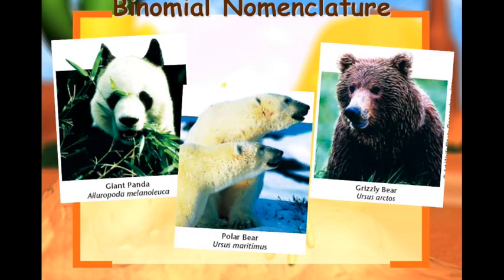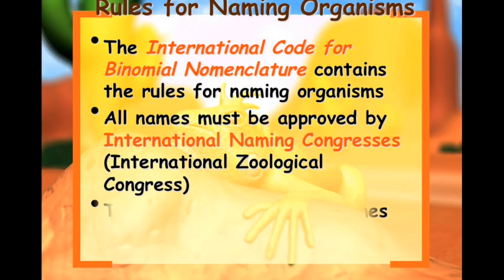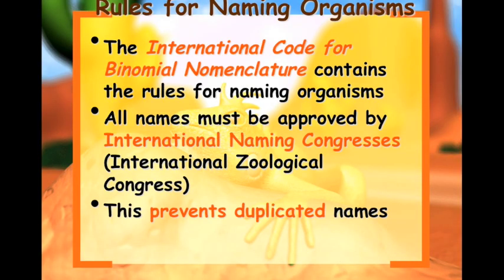Here we have three pictures: the giant panda, the polar bear, and the grizzly bear. We can look at their scientific names and tell that the polar bear and the grizzly bear belong to the same genus, which means they're probably more closely related to each other than they are to the panda. There are rules for naming organisms — it has to go through the International Code for binomial nomenclature, and all names must be approved by the International Naming Congress to prevent duplicate names.